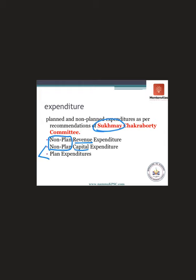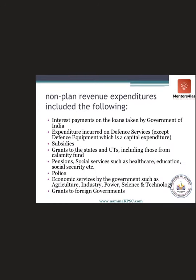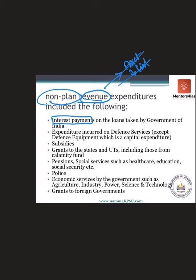Non-planned revenue expenditure — expenditures not part of the five-year plan and not creating any asset or reducing liability — included: interest payments on government loans, defense services expenditure (not on equipment), subsidies, grants to states and union territories, pensions, social services like healthcare and education, social security, police, economic services like agriculture, industry, power, science and technology, and grants to foreign governments.